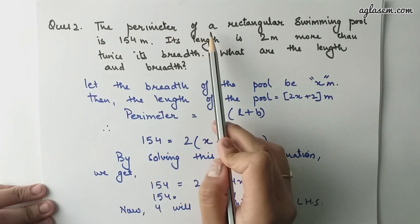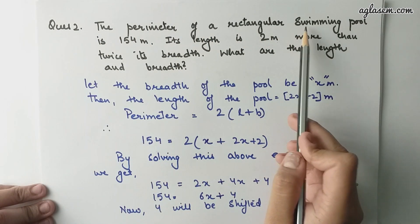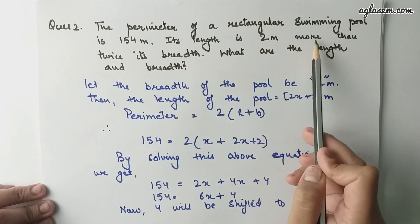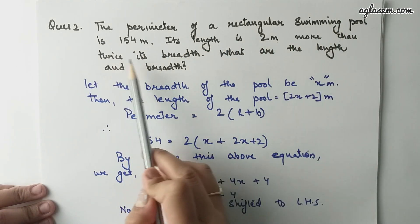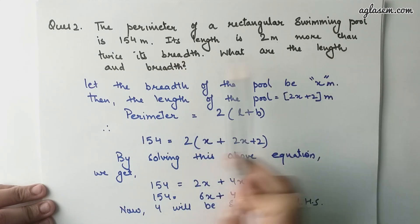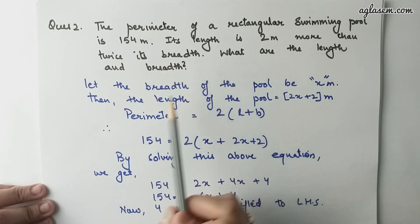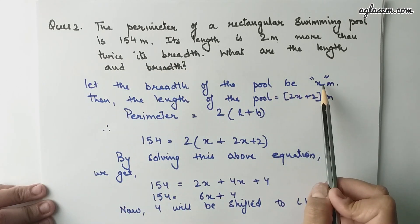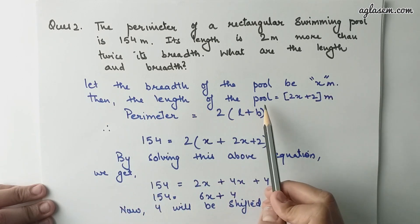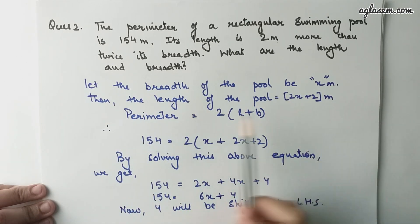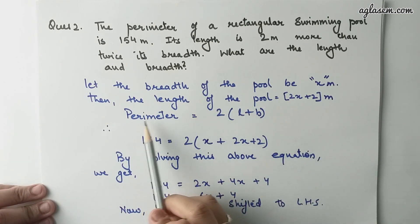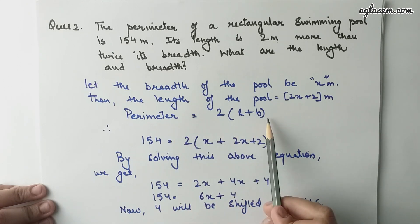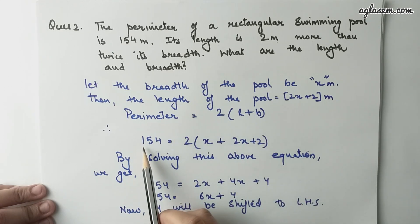Question number 2: The perimeter of a rectangular swimming pool is 154 meters. Its length is 2 meters more than twice its breadth. What are the length and breadth? Let the breadth of the pool be x meters and the length of the pool be 2x plus 2 meters. Therefore, the perimeter equals 2 into (L plus B).